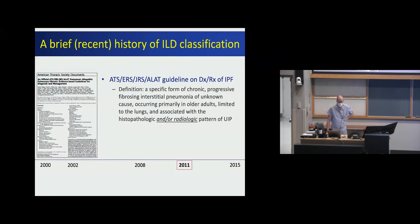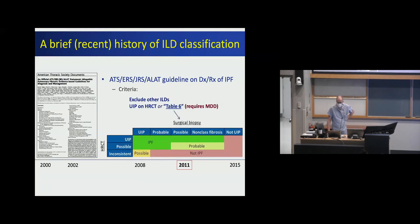In 2011, there was a more contemporary approach to IPF, now defined similarly but allowing for a radiologic pattern of UIP to be used for the diagnosis of IPF. This allows us to get away without doing a surgical lung biopsy in a large proportion of patients. There was more integration between CT and biopsy, with a complex table of CT scan findings versus biopsy findings to determine whether you can call something IPF, probable IPF, possible IPF, or something else. This was an improvement, although there were still some problems.